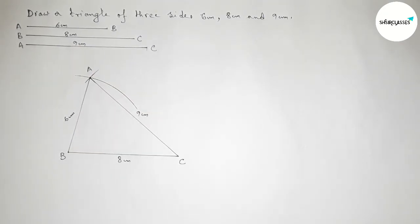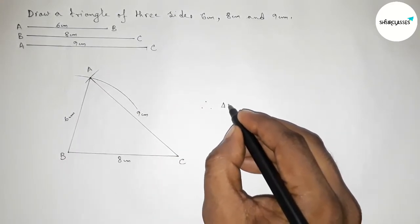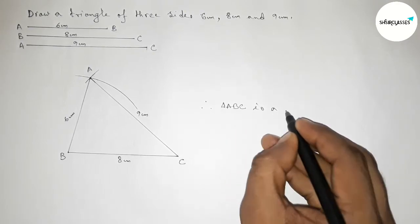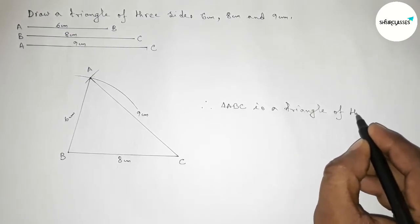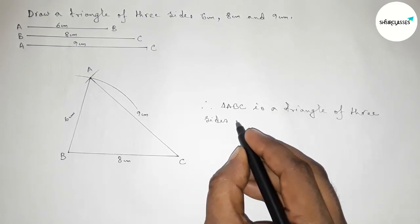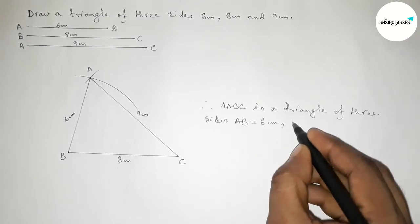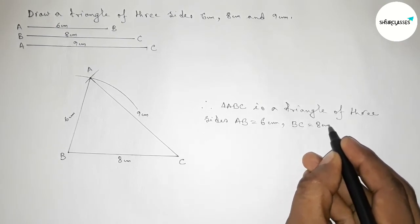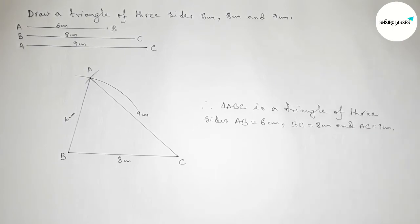Therefore we have triangle ABC with sides AB, BC, and AC. Triangle ABC is a triangle with three sides: AB equals six centimeter, BC equals eight centimeter, and AC equals nine centimeter. That's all, thanks for watching. If this video is helpful to you, please share it with your friends.